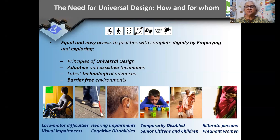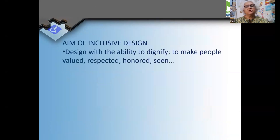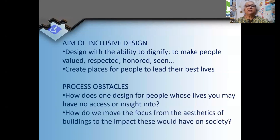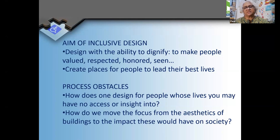Universal design also addresses cultural differences, invisible disabilities, old age, situations like pregnancy, and illiteracy — which would be a barrier in being able to read signage. The aim of inclusive design is to give dignity to as many people as possible and make people feel valued, respected, honoured, and seen, so that they can lead their best lives.